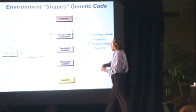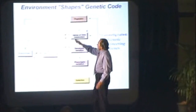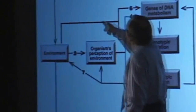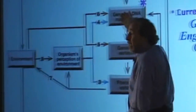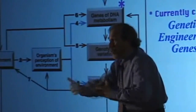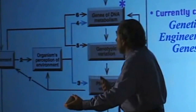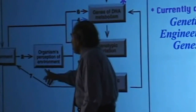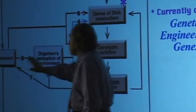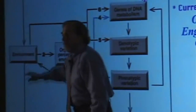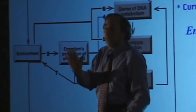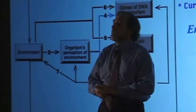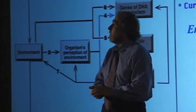The environmental signals activate genetic engineering genes — they can change your own genes and change your genotype. But watch where the arrow goes: the organism's perception of the environment is separate from the environment itself. Why? Because perception and environment may be two different things. I might say I live in a toxic, hostile environment, but that might just be my belief.